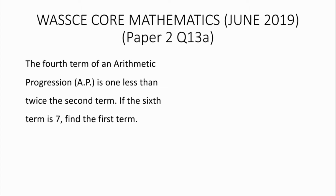The formula for finding a term of an AP is: u_n equals a plus (n minus 1) multiplied by d. The first part of the question says the fourth term of the AP is one less than twice the second term, so we have u_4 equals 2 multiplied by u_2 minus 1, where u_4 is the fourth term and u_2 is the second term.